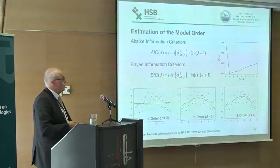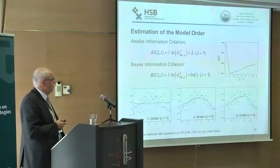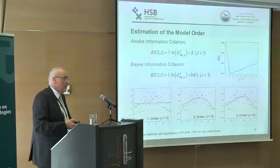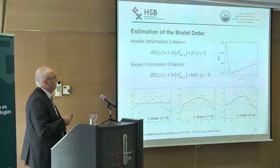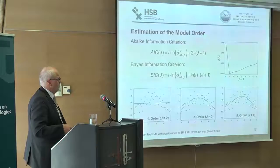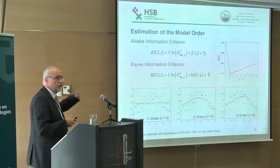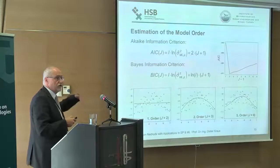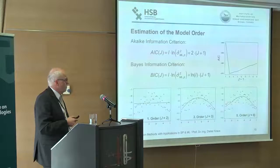To estimate the polynomial order, two well-known criteria are available: the Akaike Information Criterion (AIC) and the Bayes Information Criterion (BIC). They determine the order by not only minimizing the fitting deviation but also adding a penalty for higher model order, so one seeks the smallest suitable order. A simple example shows that order 2 gives a good fit with a low cost function value, while order 5 increases the cost due to the penalty term. These criteria provide reliable results in practice.